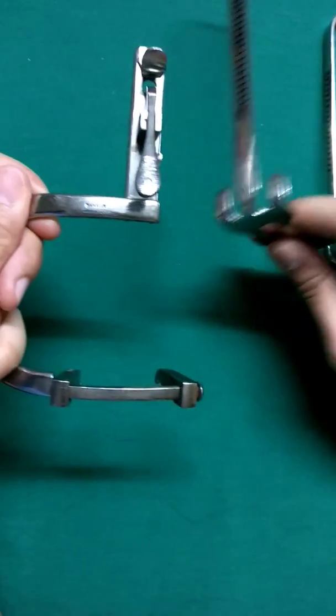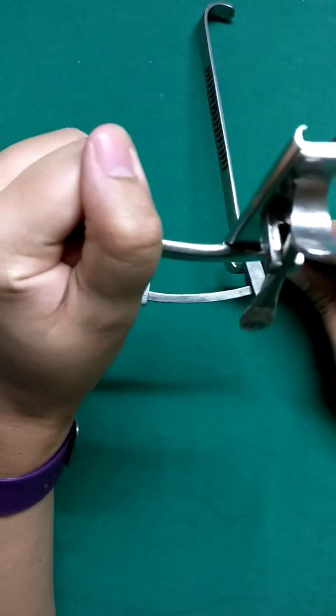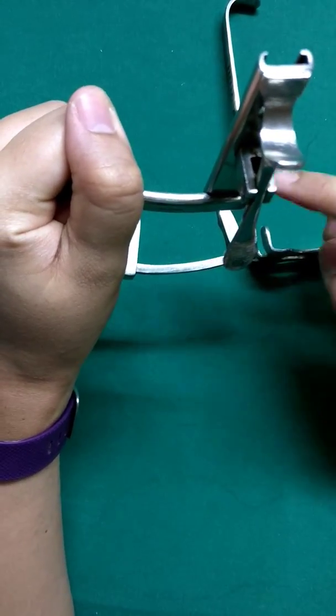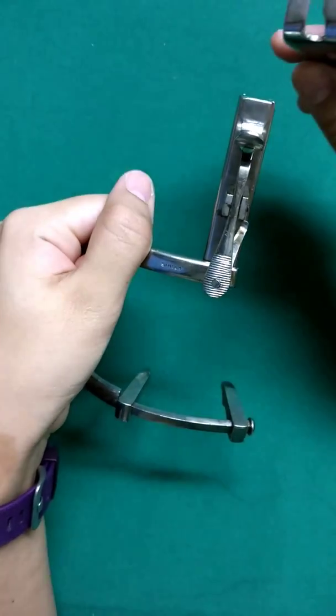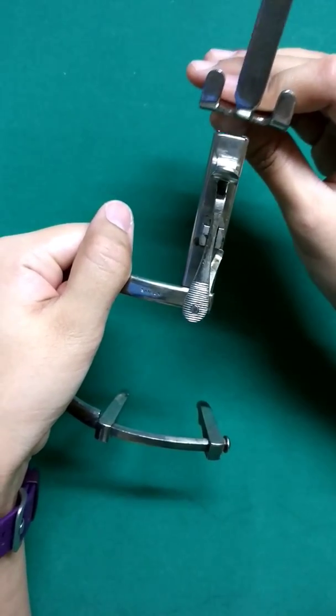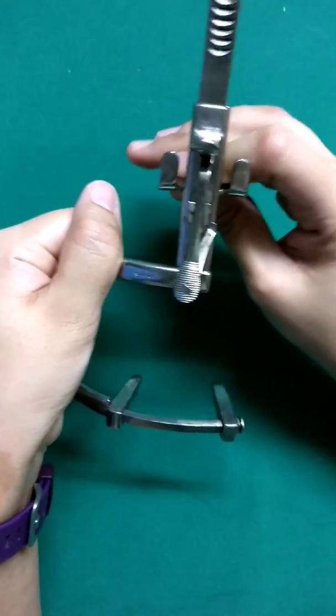The technique of putting this tongue blade is the instrument has to be held like this. This is the open-ended side and the tongue blade has to be put from the posterior region. It has to be fixed over here and slide it in.